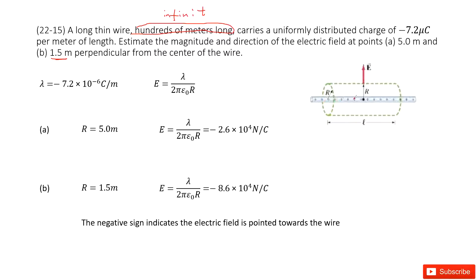For this infinity wire, we can see the electric field can be found in this function. This is the charge density. 2πε₀R is the distance from these wires perpendicular to these wires from the center of the wire.